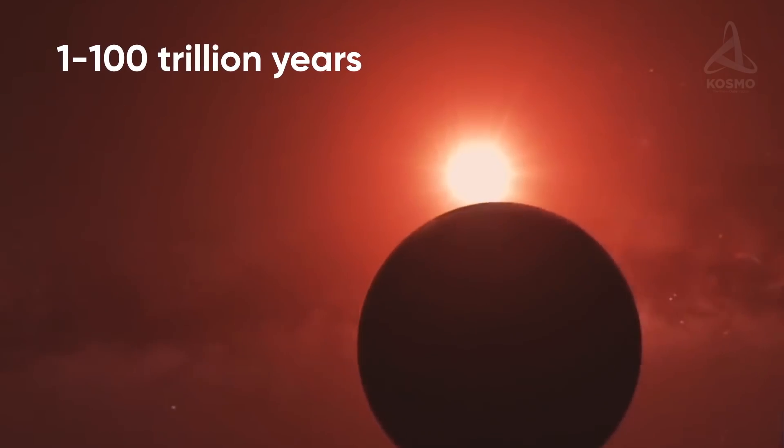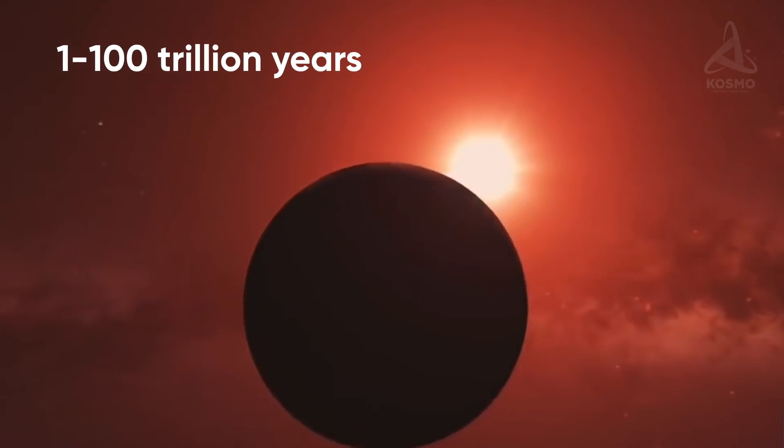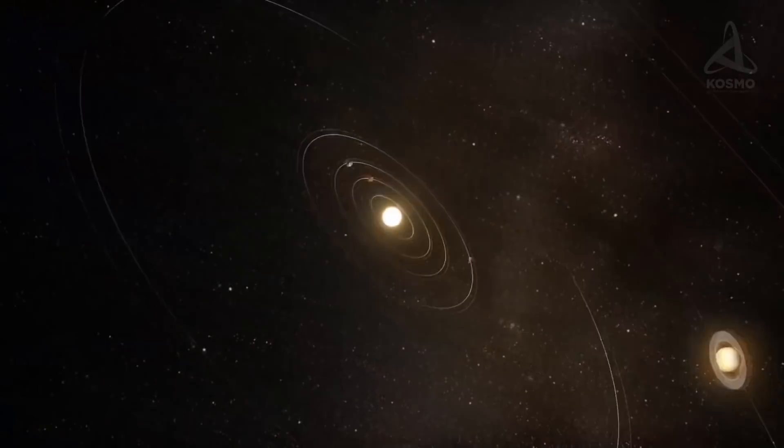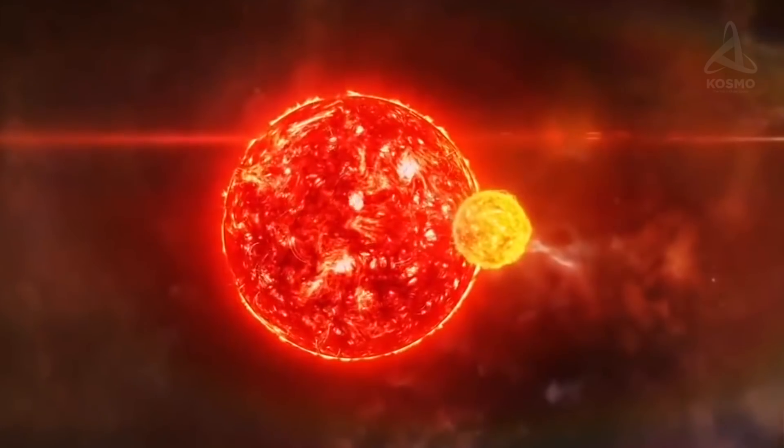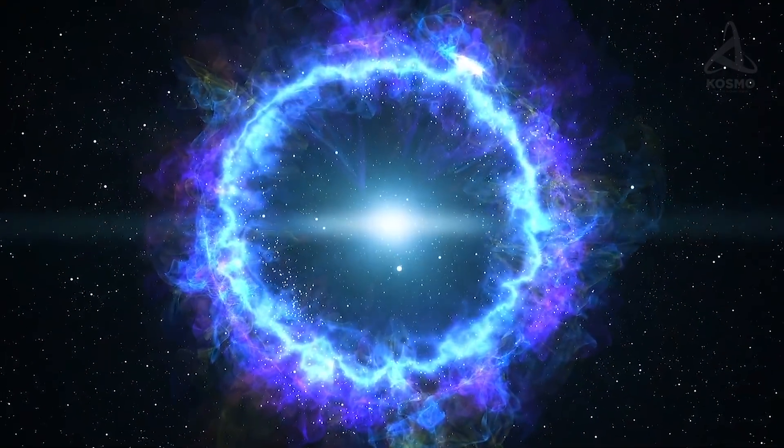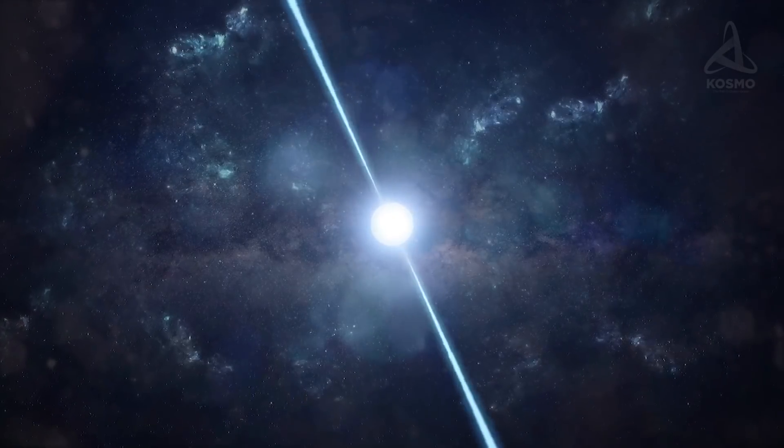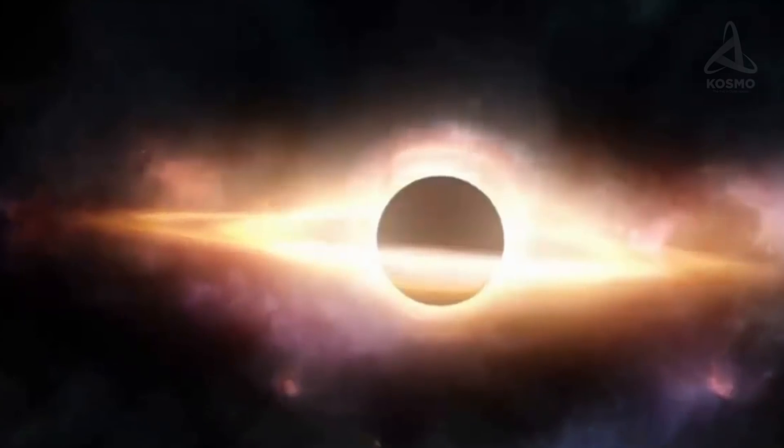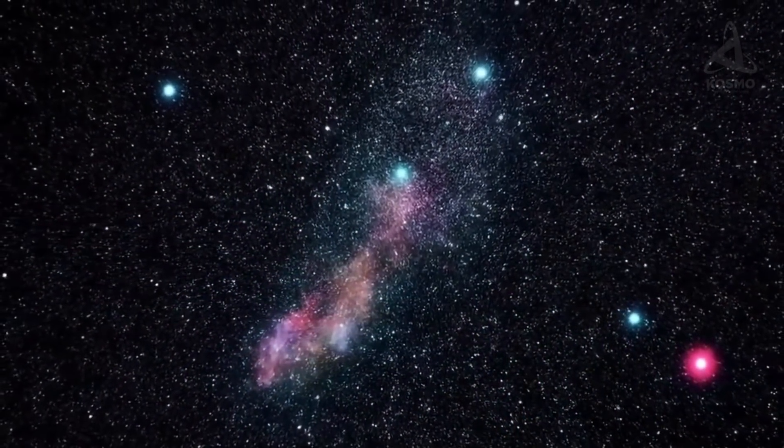The process will continue until all interstellar gas has been depleted. This era is expected to be over in the period from 1 to 100 trillion years from now. By that time, the Sun and the overwhelming majority of other stars will have depleted their nuclear fuel, subsequently turning into white dwarves, neutron stars or black holes.